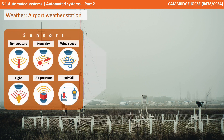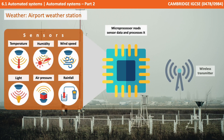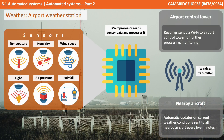The next scenario is weather, and specifically the example of an airport weather station. These are located around all major airports and use a variety of sensors to collect information about the surrounding environment. This information is fed into a microprocessor which processes the data and transmits it to various locations. They can transmit to the airport control tower via wi-fi for further processing and monitoring, and automatic updates are commonly sent out to all nearby aircraft on current weather conditions.